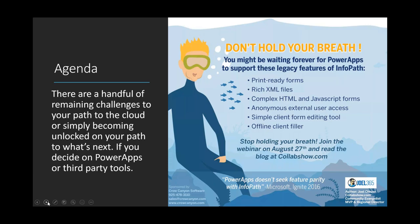The agenda for today is to go through these six things and help you understand what's going on with these particular challenges. The idea is to loosen these rocks so your ability to move off InfoPath — whether to Power Apps, third-party tools, or a custom build — becomes clearer. I've done a lot of polling and consulted many experts to come up with this list.